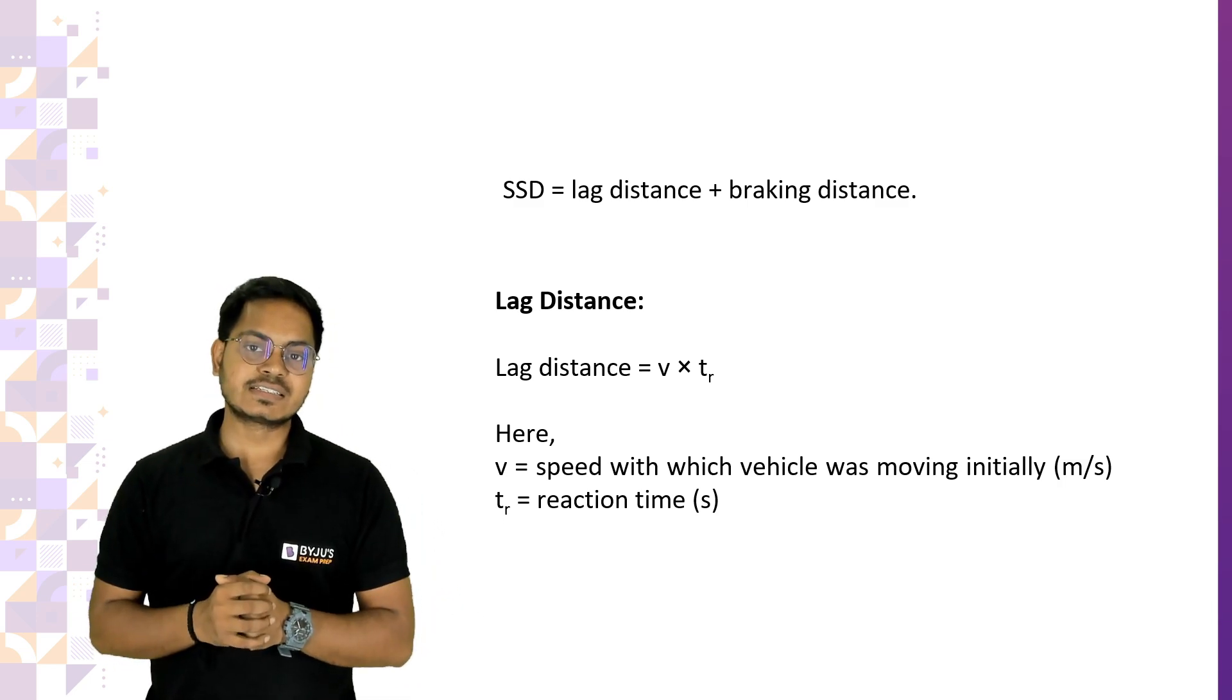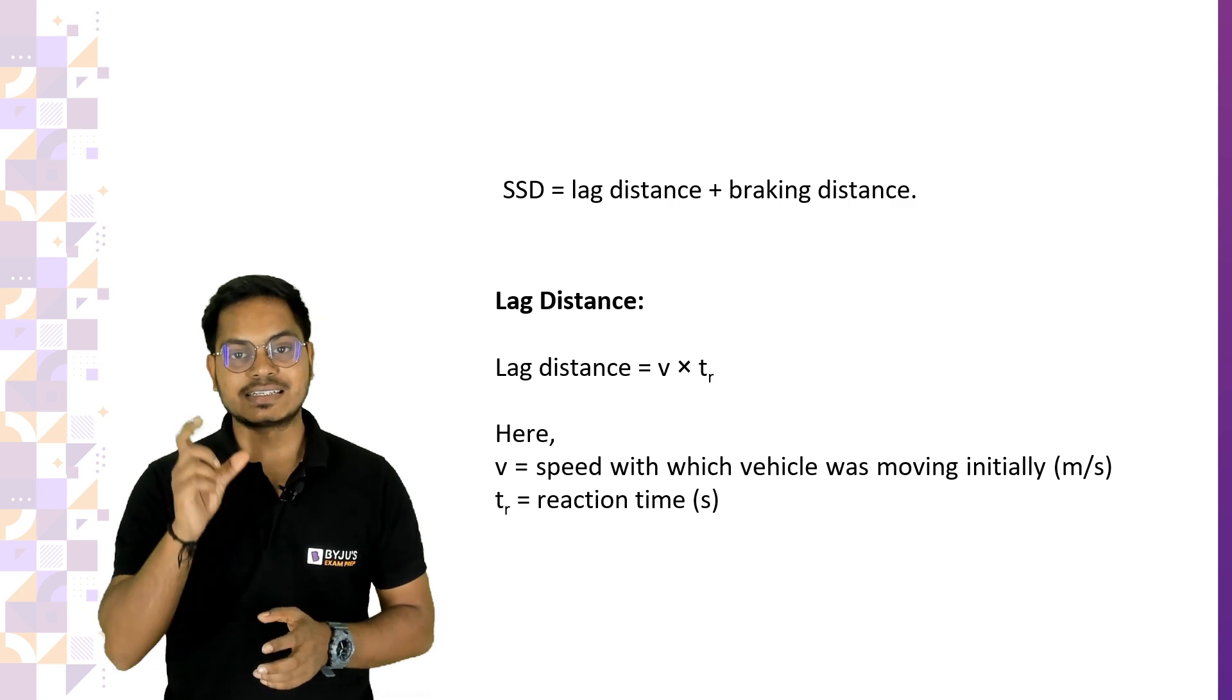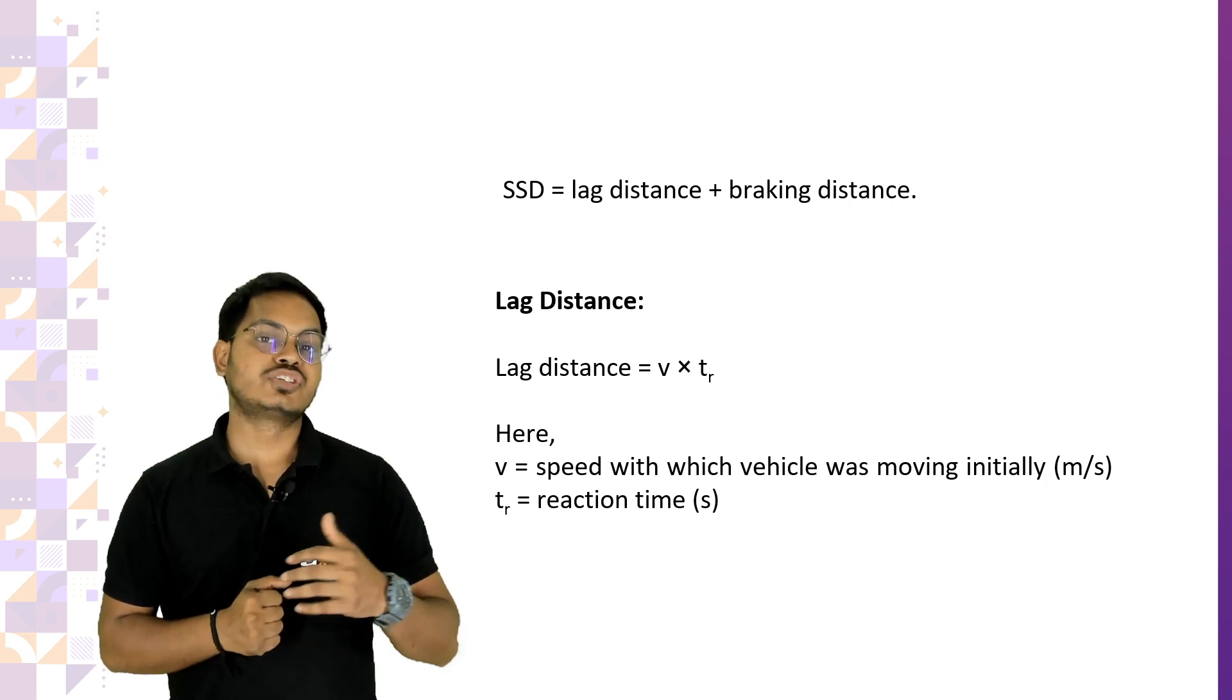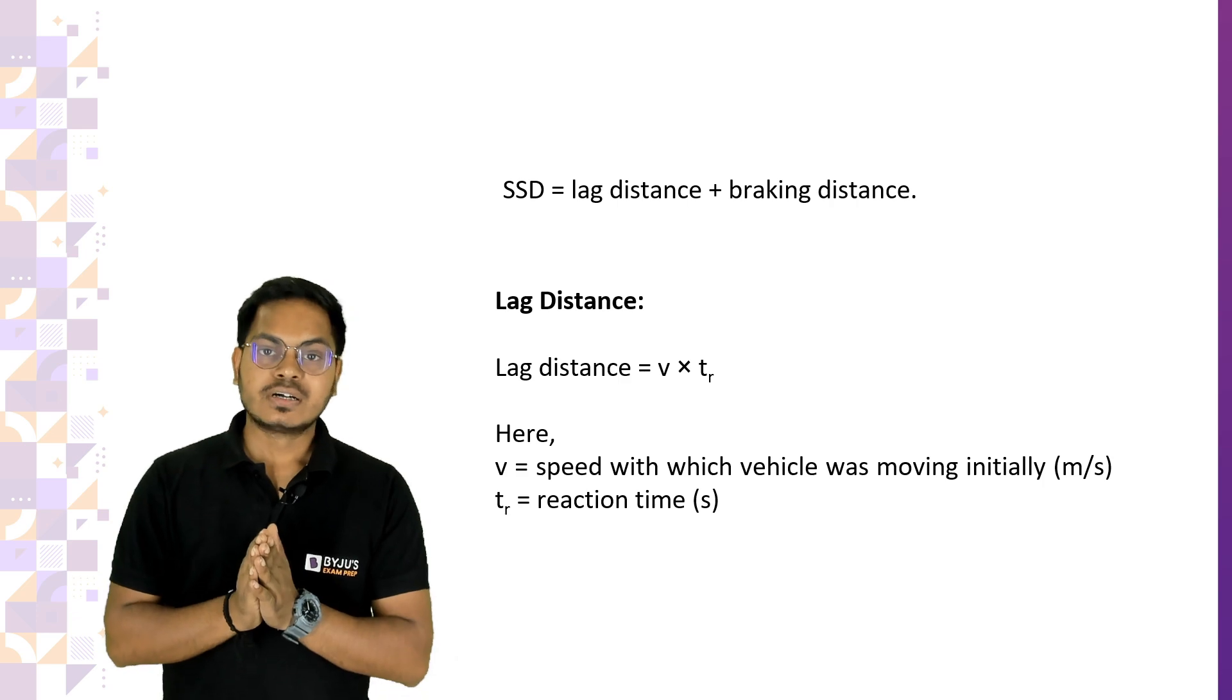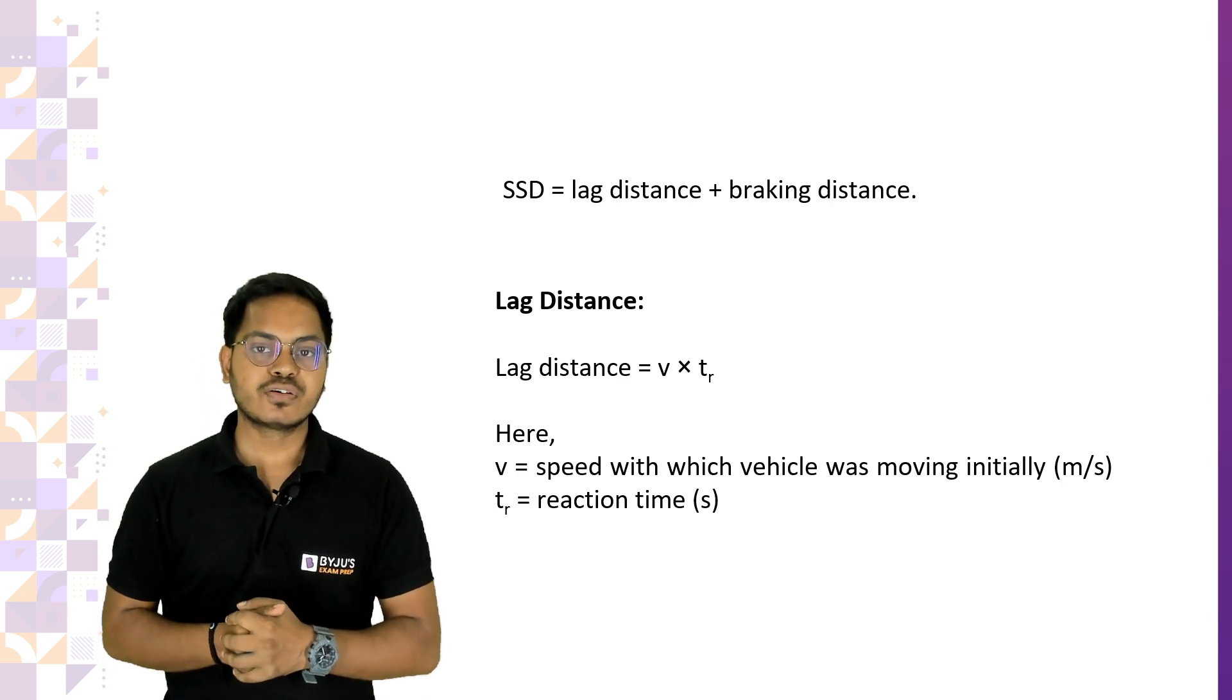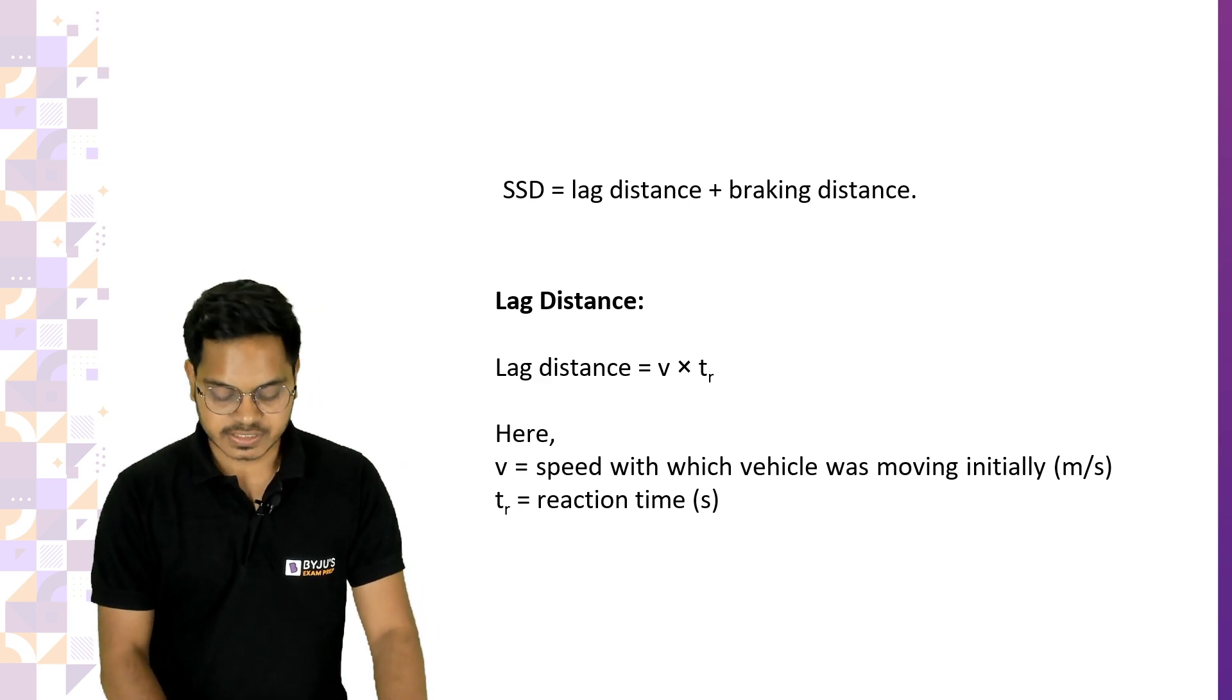Stopping sight distance is basically summation of lag distance plus braking distance, where lag distance is the distance covered by the driver during the reaction time. If the velocity was V and the time the driver took was TR, the distance covered in TR time will be V into TR, where velocity is in meter per second and TR is the reaction time in seconds.